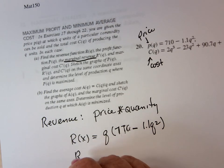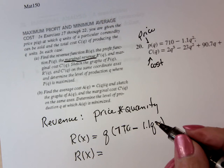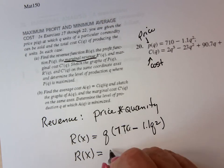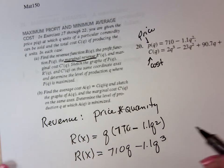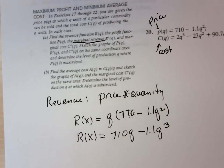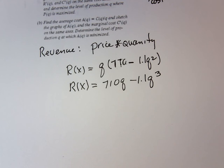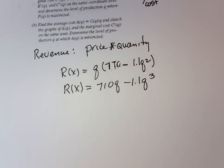So we would say that R(X) equals the quantity that I sell times the price. Okay, so that R(X), the amount of money I'm going to make, gross profit or gross income, is 710Q minus 1.1Q cubed. The quantity that I sold, because that's what Q is, Q is quantity times the price. So that's my revenue. So off of that object, that's the max amount of money that I can bring in.